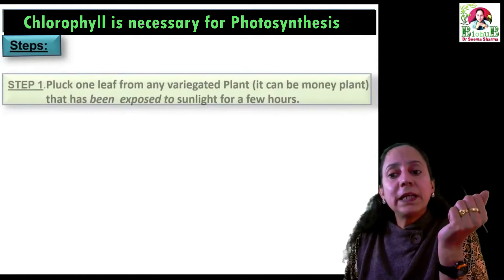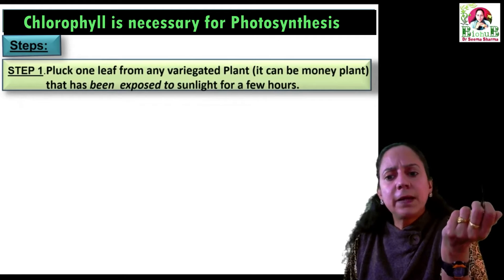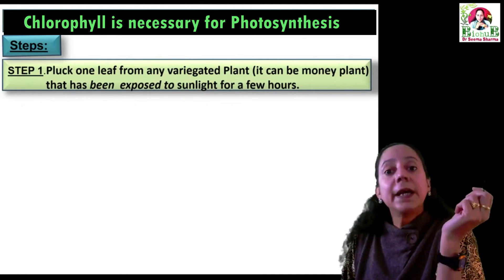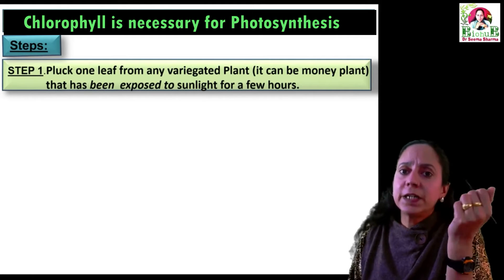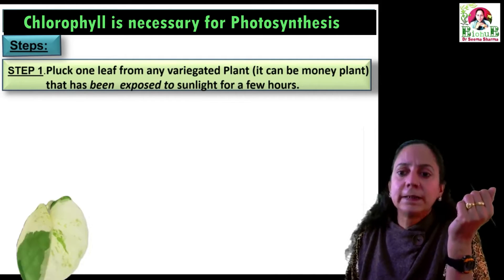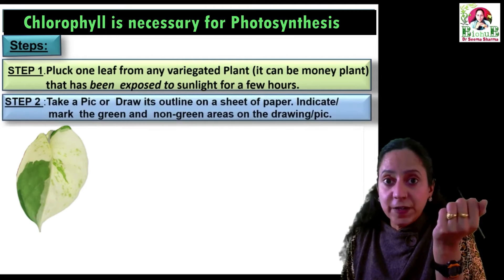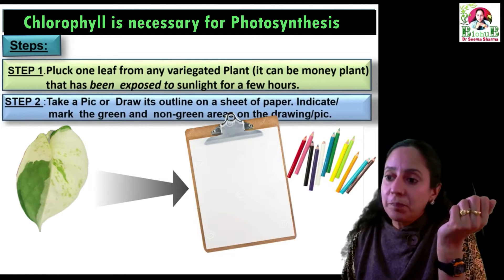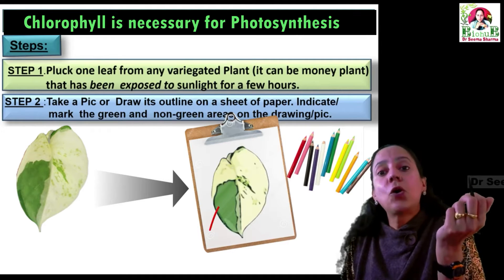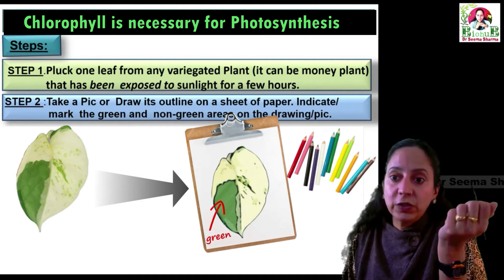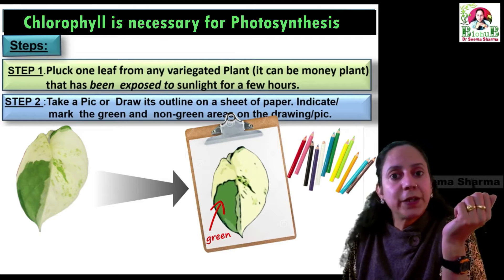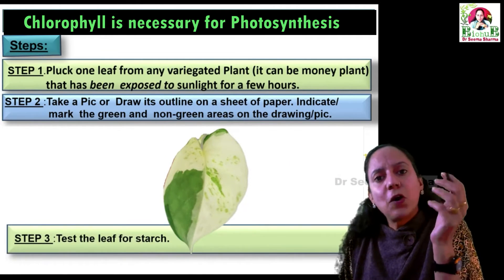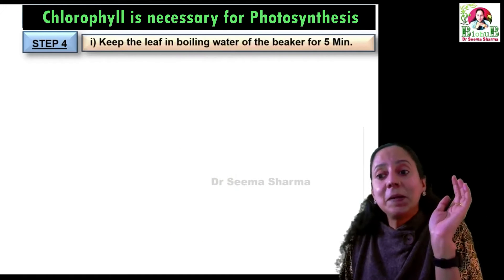Step one: pluck one leaf from any variegated plant that has been exposed to sunlight for a few hours. In this activity we have taken a variegated leaf of money plant. Step two: take a picture of this variegated leaf or draw its outline on a sheet of paper, and indicate or mark the green and non-green areas on the drawing or picture as shown.